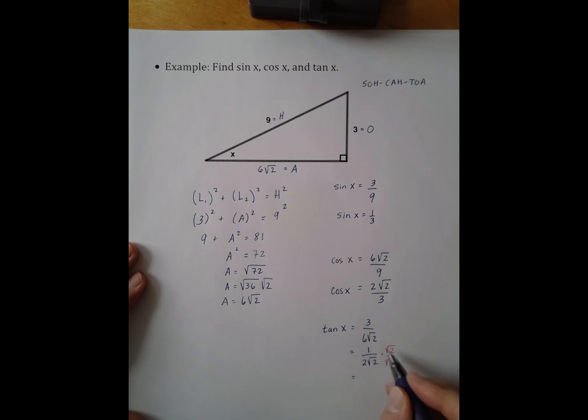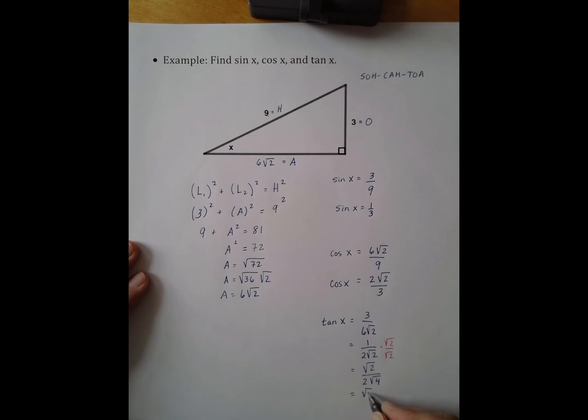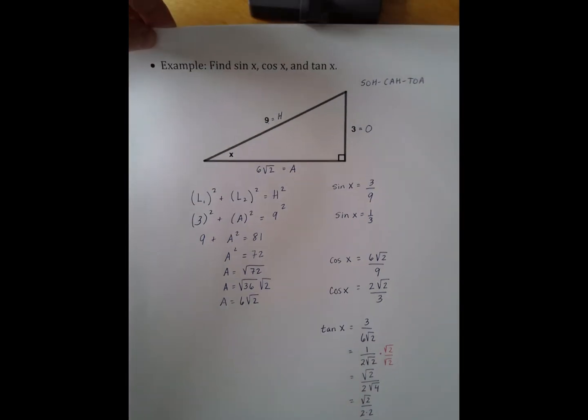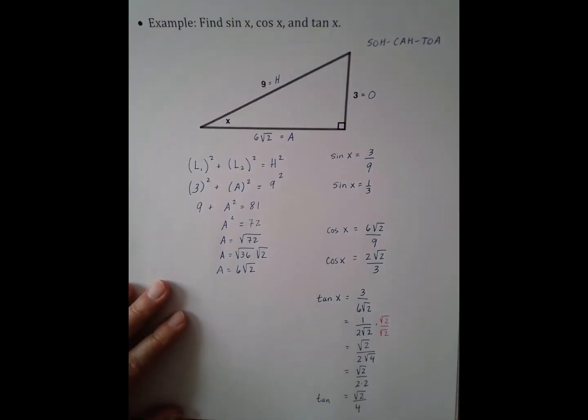So my numerator now is 1 times the square root of 2. My denominator is 2 times the square root of 4. But we know what the square root of 4 is, the square root of 4 is 2. So I now have that tan of X equals the square root of 2 over 4. And that cannot be simplified further because the 2 is underneath the square root. I can't divide those two numbers into each other. They would both have to be underneath the square root or both not be underneath the square root.